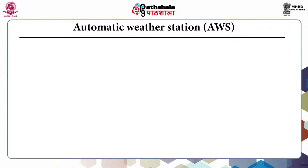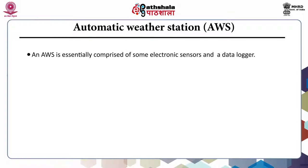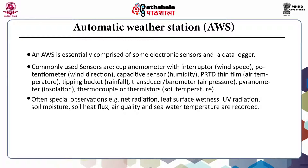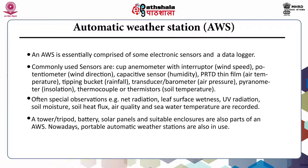Next is the automatic weather station. An automatic weather station is essentially comprised of electronic sensors and a data logger. Commonly used sensors are: cup anemometer for wind speed, potentiometer for wind direction, capacitive sensors for humidity, PRTD thin film for air temperature, tipping bucket for rainfall, transducer or barometer for air pressure, pyranometer for insolation, and thermocouple or thermistors for soil temperature. Special observations like net radiation, leaf surface wetness, ultraviolet radiation, soil moisture, soil heat flux, air quality parameters, and sea water temperature are also recorded. A tripod or tower is used to mount the sensors, and battery solar panels are an integral part of the AWS. Portable automatic weather stations are also in use.